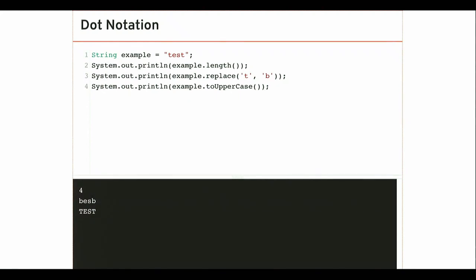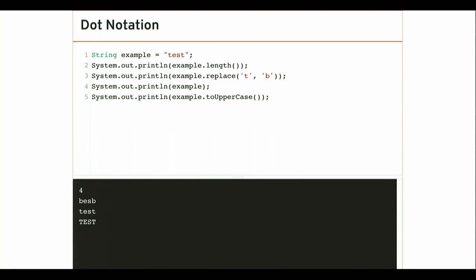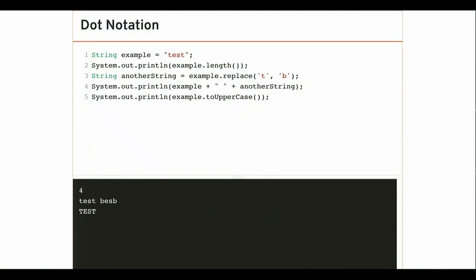An important point about strings: none of these methods modify the original string. Even after calling example.replace, the original 'example' variable contains the same characters it was initialized with. In Java, once you initialize a string, that string never changes — it's immutable. Any method that might seem to modify it will actually return a new string. So I can create another string variable, set it to the result of replace, then print both: you see the original unchanged and the modified version side by side.